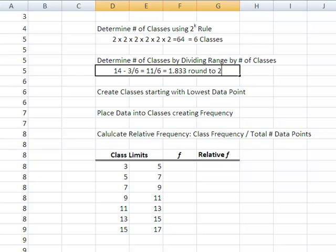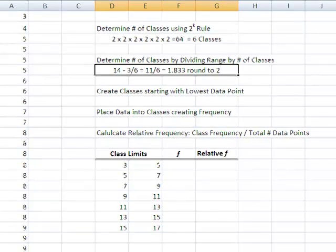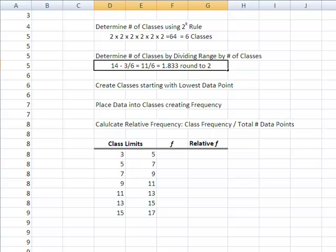I'm going to round that to 2. So now I have 6 classes with a class width of 2 each. So I'm going to start creating my classes, and I'm going to start with the lowest data point. I'm going to say it goes from 3 plus the width to 5. Remember, that class goes from 3 up 2 but not including 5.